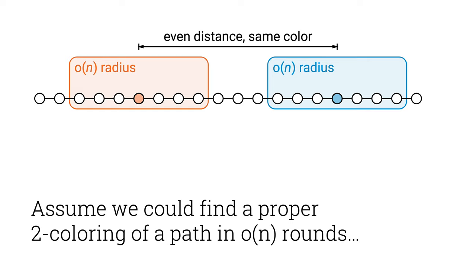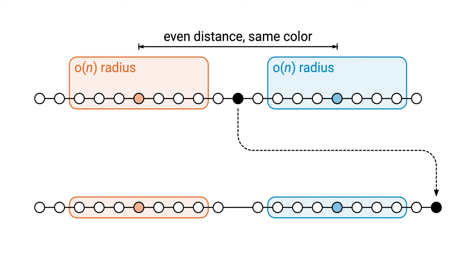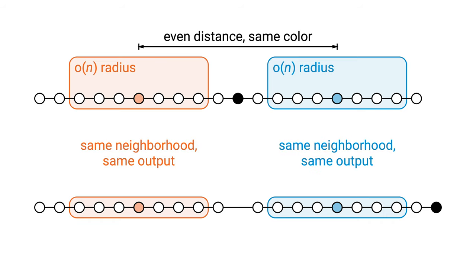But let's then modify the input graph like this. We just move this one node to a new place, keep everything else the same, including all unique identifiers. These two local neighborhoods don't change. So the local outputs of these two nodes won't change either. So both nodes will still output the same color.